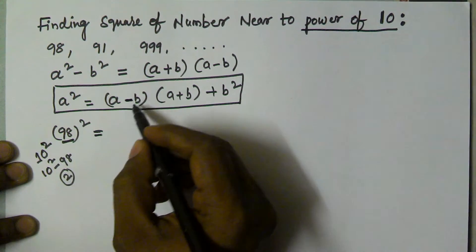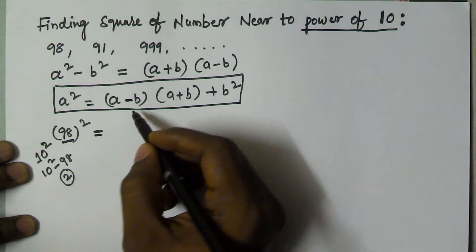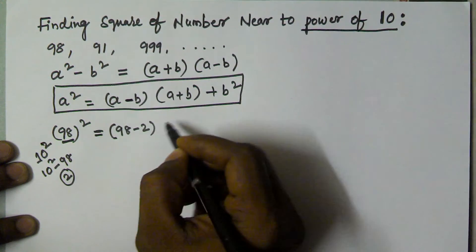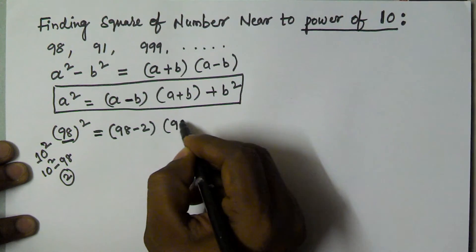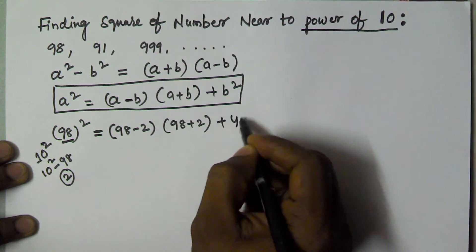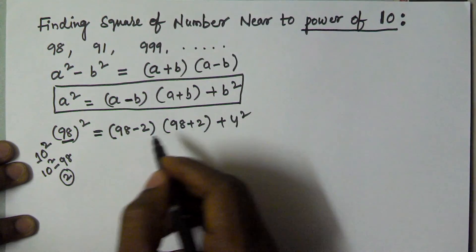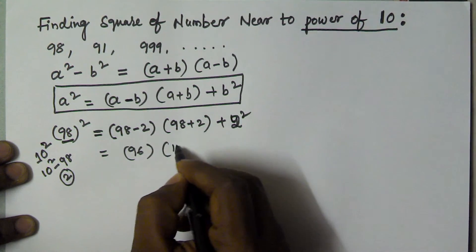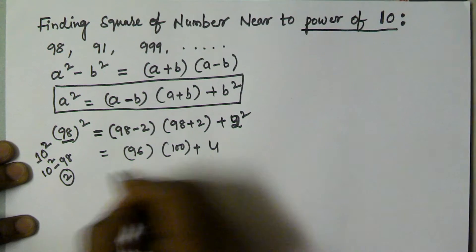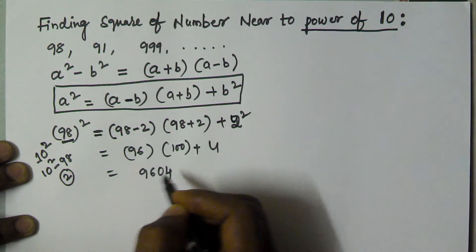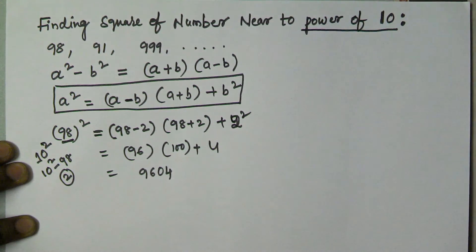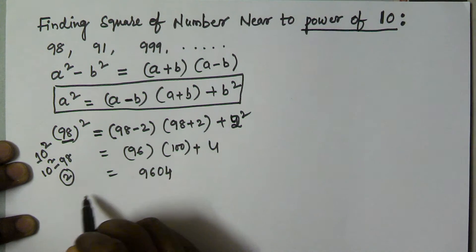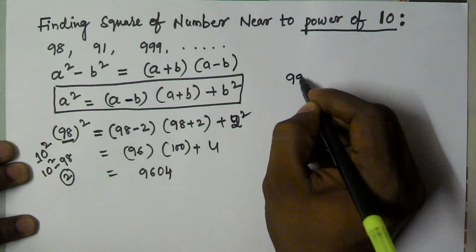With a = 98 and b = 2: (a minus b) = 98 minus 2 = 96; (a plus b) = 98 plus 2 = 100; and b² = 2² = 4. So 98² = 96 × 100 + 4 = 9604. The value of 98 squared is 9604.